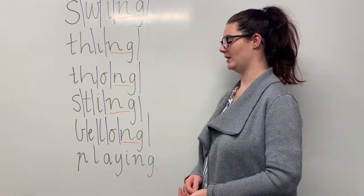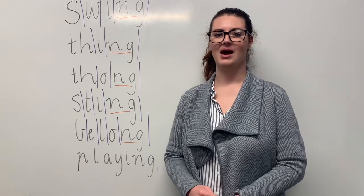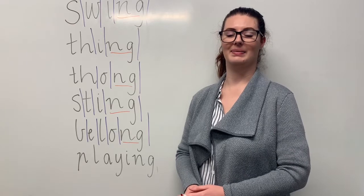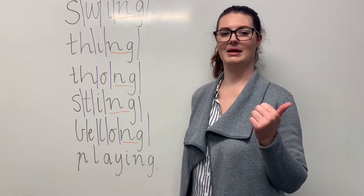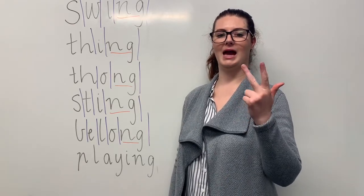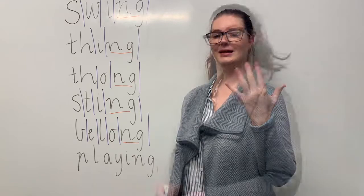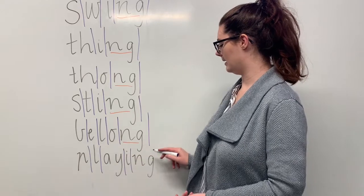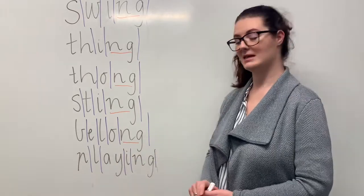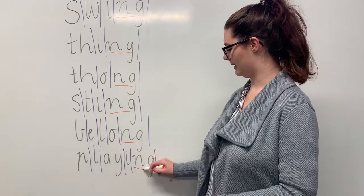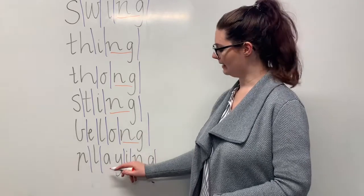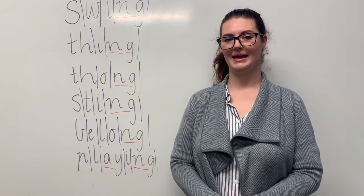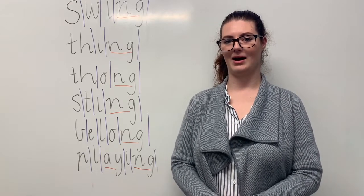And our final orange word is playing. I enjoy playing with my friends. The sounds in playing are together: p-l-a-i-n-g. The letters in playing are p-l-a-y-i-n-g. The part that we need to remember is the NG diagraph making the N sound and the AY diagraph making the A sound. Can you teach it to me? Playing. P-l-a-y-i-n-g.